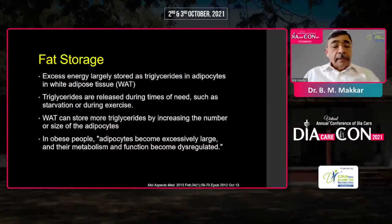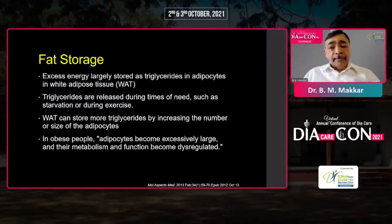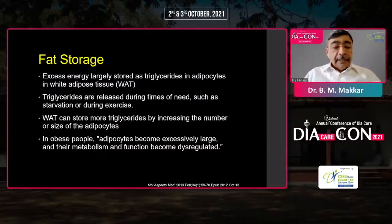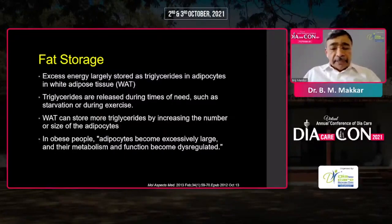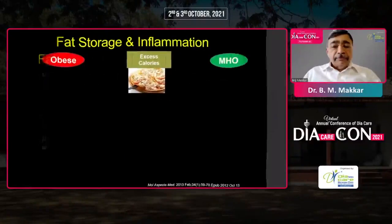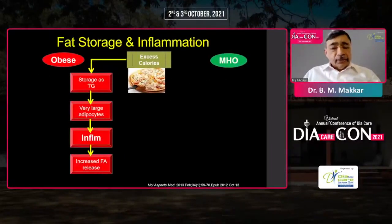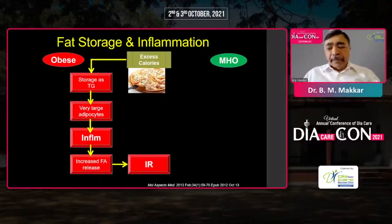What leads to this metabolic state in obesity? To understand this, we have to understand how fat is stored in the body. There is excess energy largely stored as triglyceride in adipose tissue, which is made available in times of need such as starvation or exercise. White adipose tissue can store this energy by either increasing the number or increasing the size of adipocytes. In obese individuals, there is an increase in the size of adipocytes where fat becomes very tightly compressed within the cell, leading to stress within the adipocytes and inflammation leading to secretion of inflammatory cytokines. This excess calorie stored as adipocyte hypertrophy leads to inflammation and insulin resistance — the development of metabolic resistance.